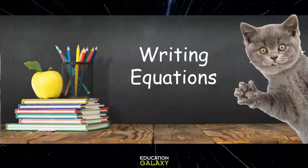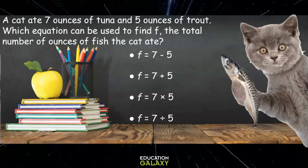Now that we know what a variable is, we can write equations using them. A cat ate 7 ounces of tuna and 5 ounces of trout. Which equation can be used to find F, the total number of ounces of fish the cat ate?